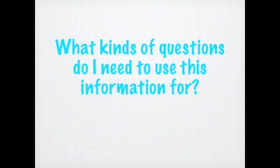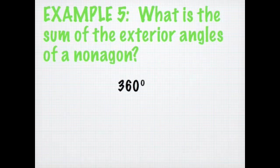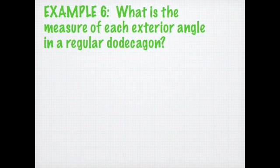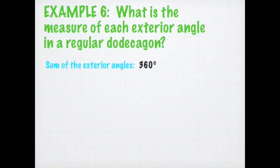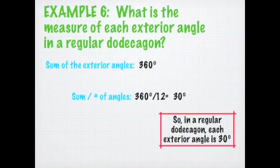What kinds of questions do I need to use this for? Example: what is the sum of the exterior angles of a nonagon? A nonagon has nine sides, but you don't even have to think — just memorize: 360 degrees. The sum of the exterior angles of any polygon is 360 degrees. The next one is a little harder: what is the measure of each exterior angle in a regular dodecagon? We know the sum is 360, and a regular dodecagon has 12 exterior angles all the same, so 360 divided by 12 gives us 30 degrees. Each exterior angle in a regular dodecagon is 30 degrees.